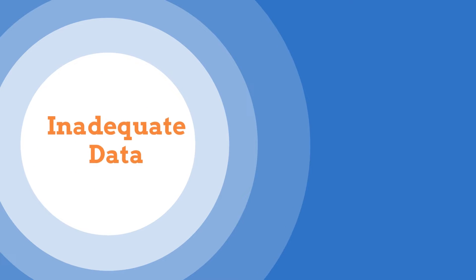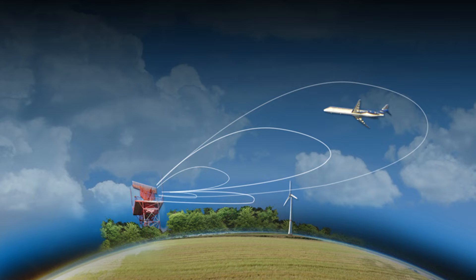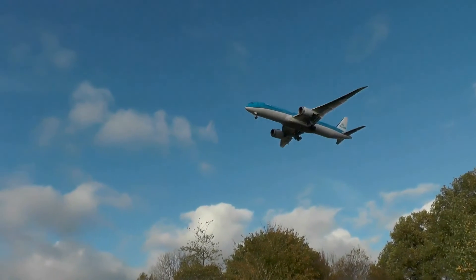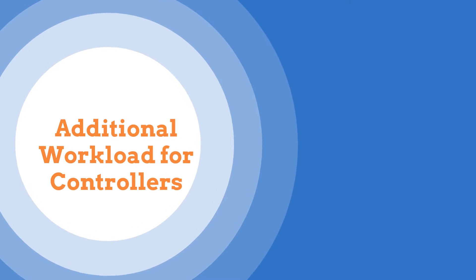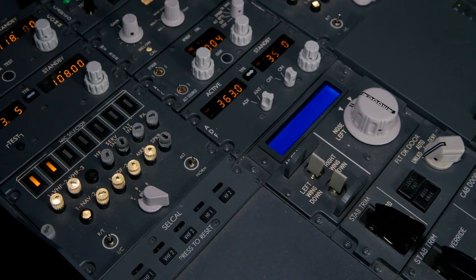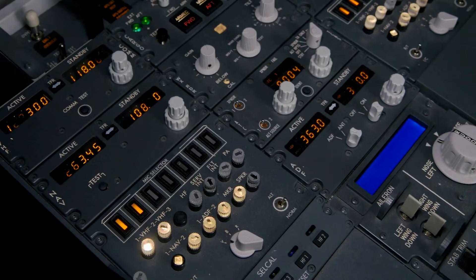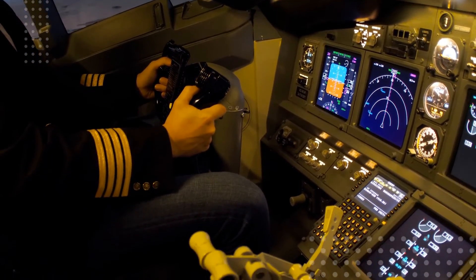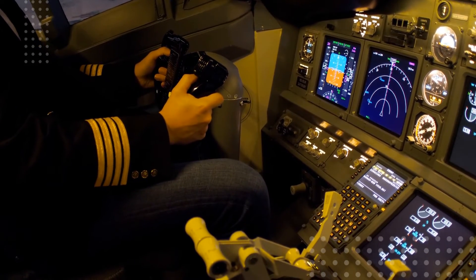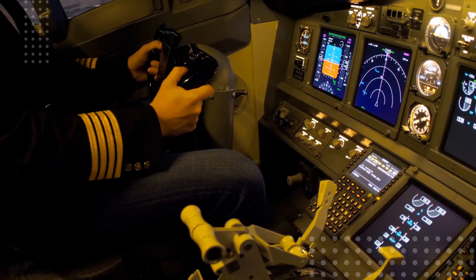Primary radar will detect all objects including aircraft in the coverage area, but it is unable to provide aircraft-specific information such as aircraft details and altitude to air traffic controllers. Primary radars are not able to provide aircraft-specific details, so the controller manually establishes contact with the crew on board to know aircraft details along with altitude. This increases controller workload and is not suitable for crowded airports.